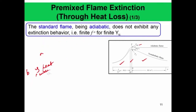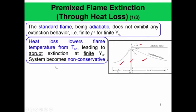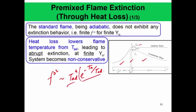Heat loss essentially lowers the flame temperature from the adiabatic flame temperature and that can lead to abrupt extinction. It is abrupt because the burning flux has a very strong Arrhenius dependence on the burnt gas temperature. Recall that F₀² is essentially T_ad⁴ times e^(−T_activation/T_ad), so it has both Arrhenius and power-law dependence. The Arrhenius dependence is very sensitive, so perturbing the flame temperature even a little will significantly perturb F₀².